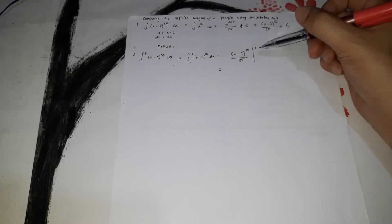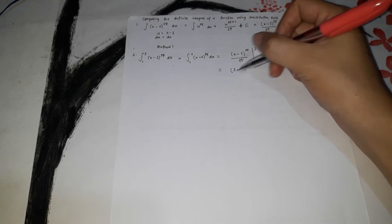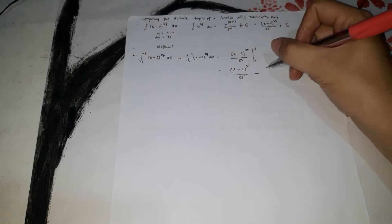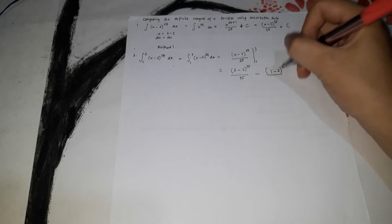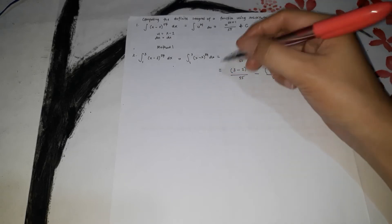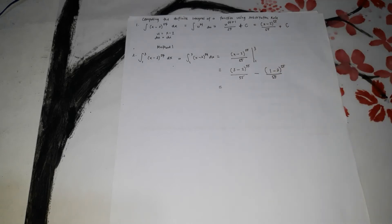Next, substitute the limits. This is the antiderivative, and we copy the limits 1 and 3 on the vertical line. Substituting: (3 minus 2)^55 over 55 minus (1 minus 2)^55 over 55. So 3 minus 2 is 1, giving 1^55 over 55. And 1 minus 2 is negative 1, giving (negative 1)^55 over 55.